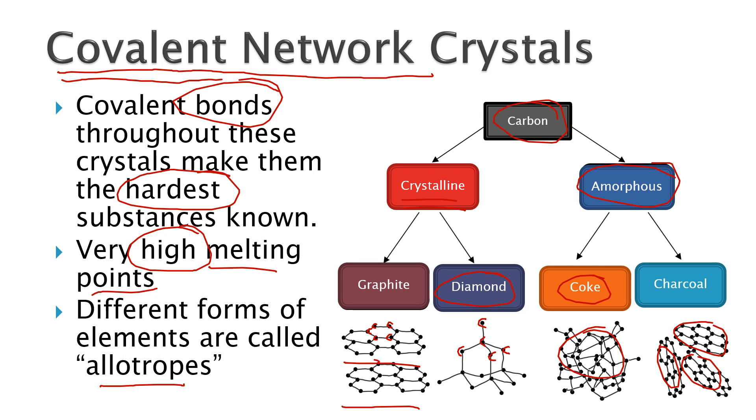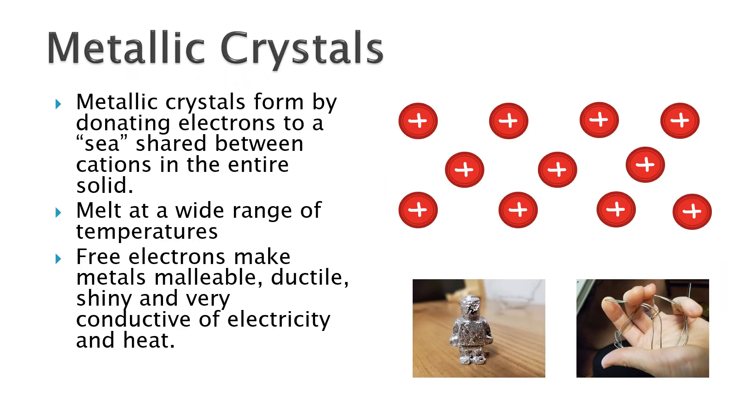Think of anything super hard, and it's probably a covalent network. Things like glass or many rock formations have a covalent network that gives them that property.